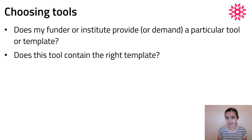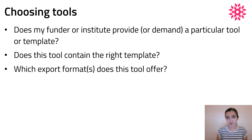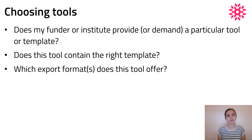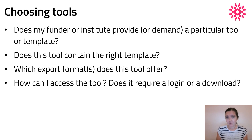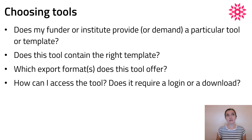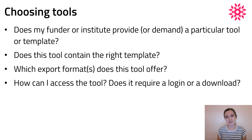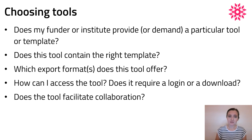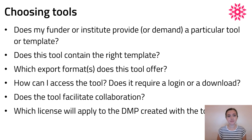You could look at which export formats the tool offers — can you only get a Word document or PDF, or can you get something machine-actionable like a JSON file? A practical concern is how others can access the tool: does it require downloading or installing software, or a login? This will affect how easy collaboration is. Consider how the tool facilitates collaboration — does it allow multiple authors or editors, and can you track changes? Another question is what license applies to the DMP created with the tool, in case you want to share or use it beyond the project proposal.